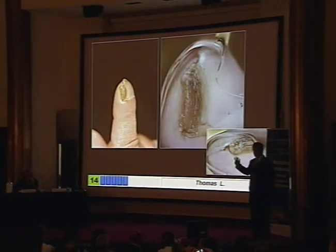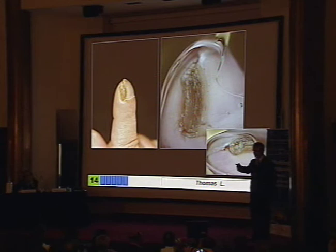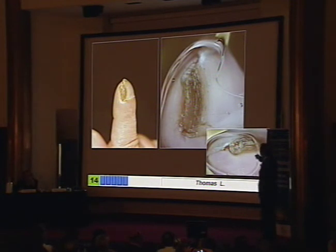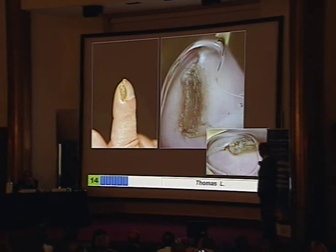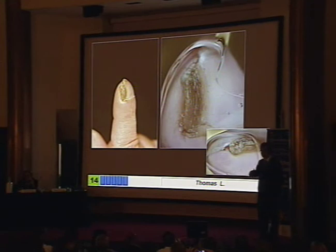Onychomatricoma shares exactly the same dermoscopic features as squamous cell carcinoma and Bowen's disease. The only sign you can rely on is the sharp demarcation between the involved nail plate and the uninvolved nail plate. This very sharp demarcation, which can also be seen clinically, is in favor of onychomatricoma as opposed to squamous cell carcinoma and Bowen's disease.